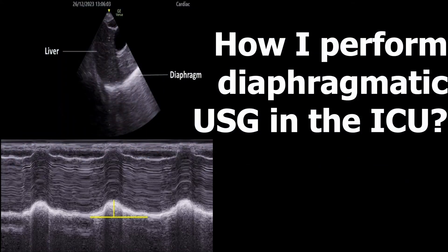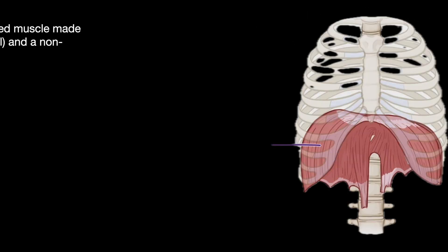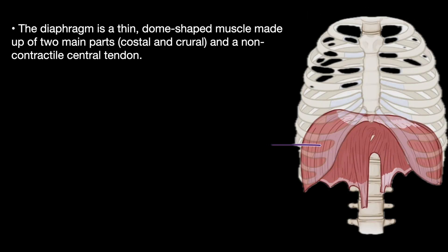Today we will be discussing how to perform diaphragmatic ultrasound in the ICU. The diaphragm is a thin dome-shaped muscle made up of two main parts: a costal part from the ribs and a crural part from the vertebral bodies, with a non-contracted central tendon shown here in white.